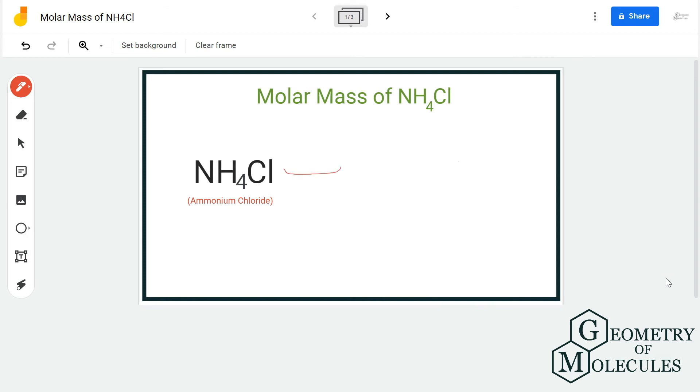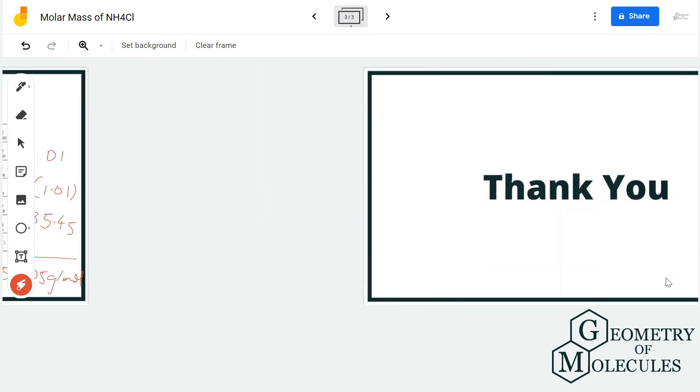And if I have one mole of NH4Cl, this will be the value for it—it will weigh 53.50 grams per mole. So I hope this video helps you to understand how to find out the molar mass of molecules.